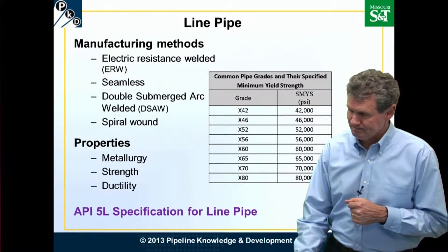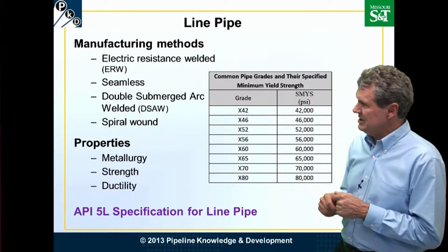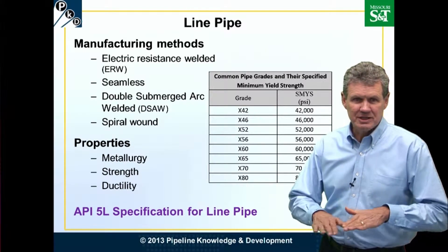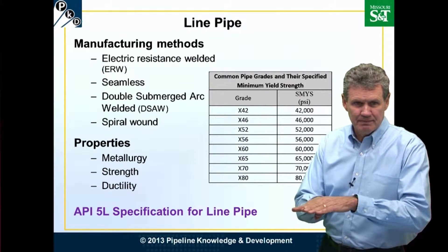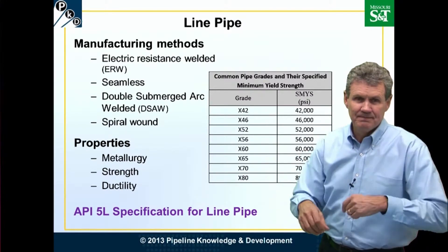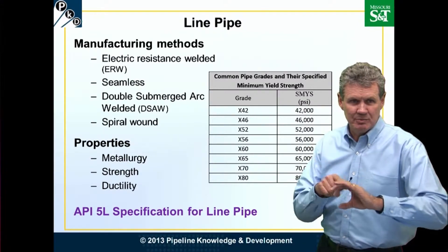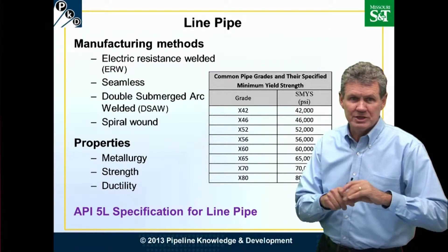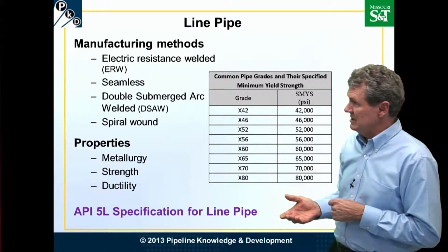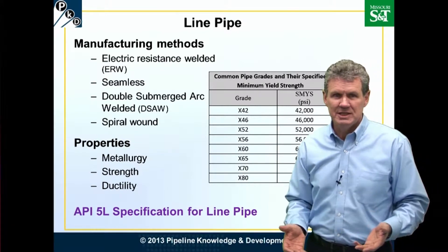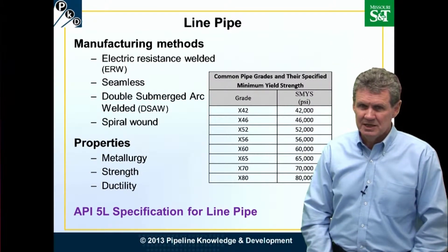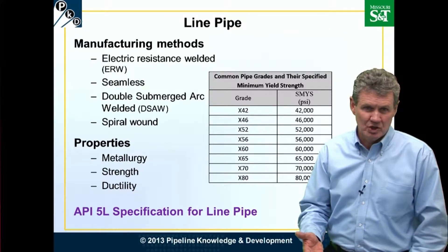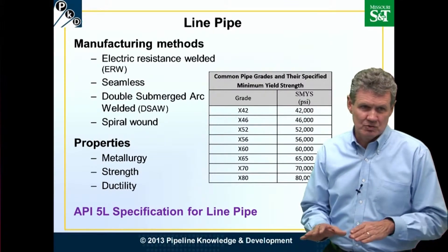Let's start out with pipe. If you think about it, there are really only two ways to make pipe. One is to take a flat piece of steel and fold it up or twist it up. The other is to take a steel rod and punch a hole in it. A steel billet with a hole punched in it longitudinally is how we make seamless pipe. We don't tend to use a lot of seamless pipe in the oil and gas pipeline business — plant environments might use those more. So we tend to make pipe out of flat steel that's rolled up.